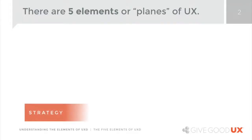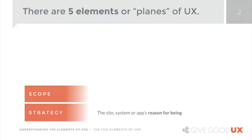The first plane is called the strategy plane — the site, system, or app's reason for existing in the first place: why you created it and why people are willing to use it or why they need it. The second plane is scope, which is essentially the features and functions that are contained within the product itself.